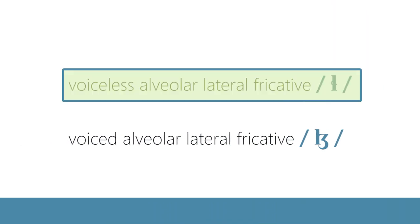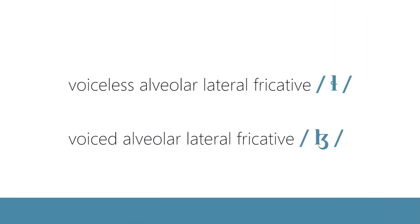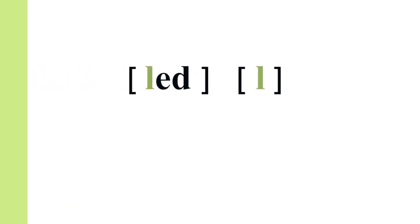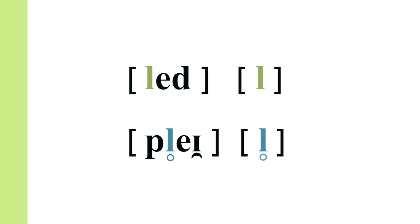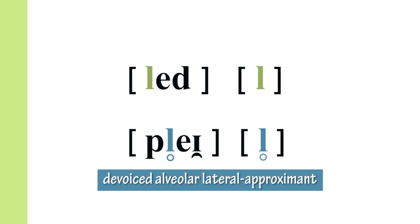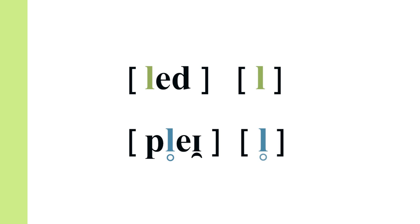The voiceless alveolar lateral fricative: in English, the /l/ in the word 'led' is a voiced alveolar lateral approximant. In a word like 'play,' it becomes devoiced, which means that the voicing is subtracted from it.